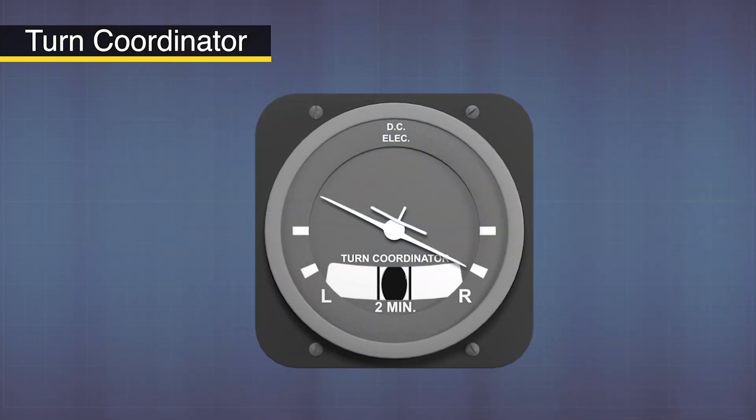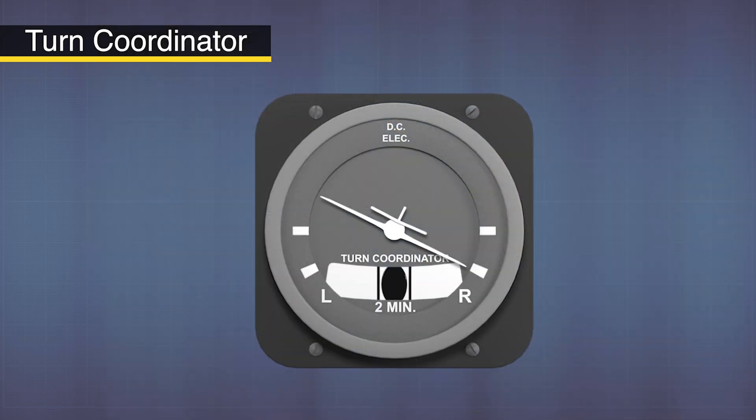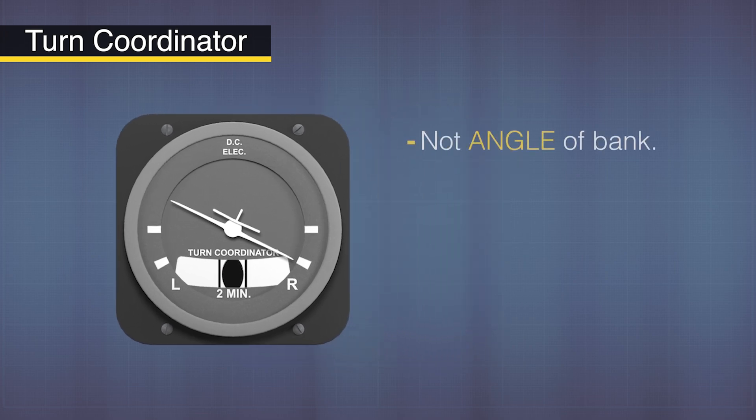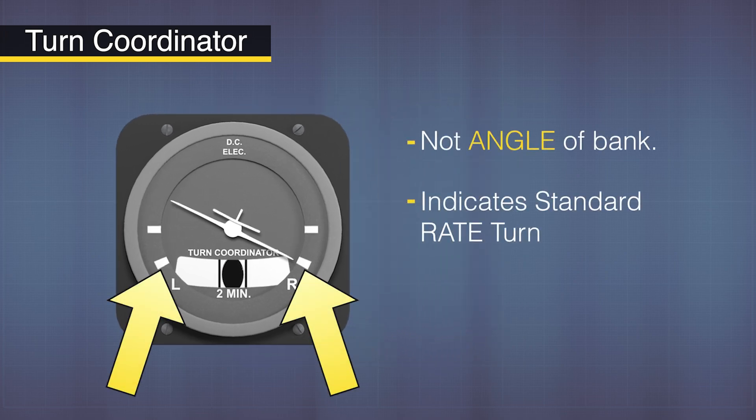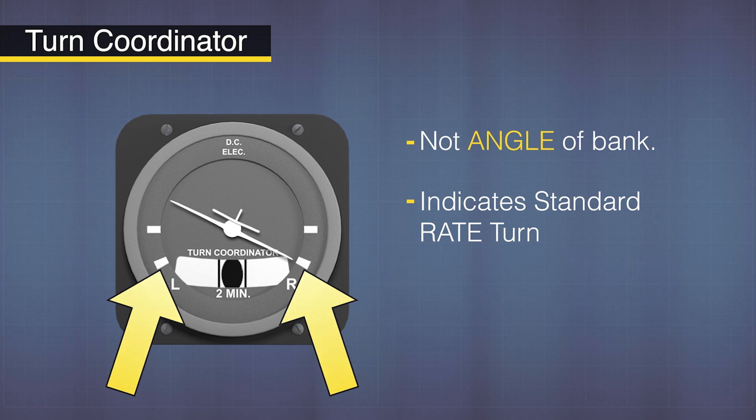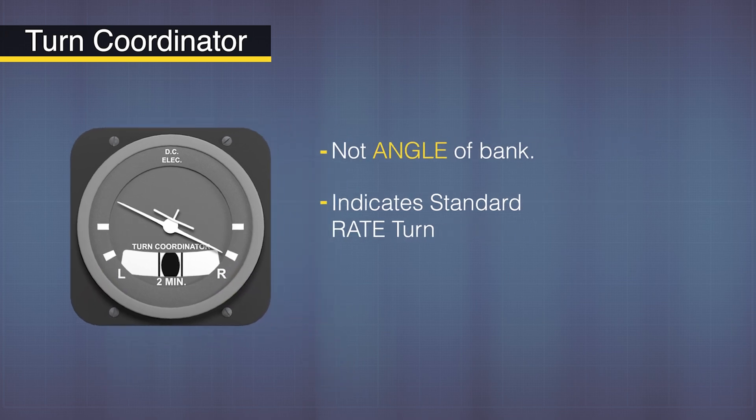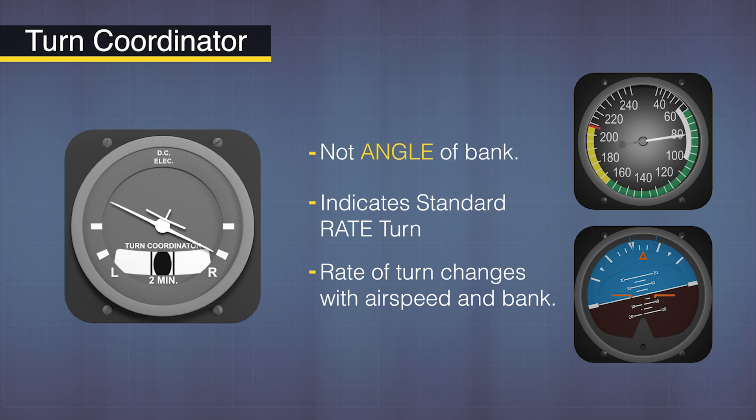Keep in mind that even though the miniature airplane shows the direction of the bank, it does not show the angle of bank. The hash marks in the instrument face indicate a standard rate turn. The miniature airplane's exact angle of bank will change depending on other factors, like airspeed.